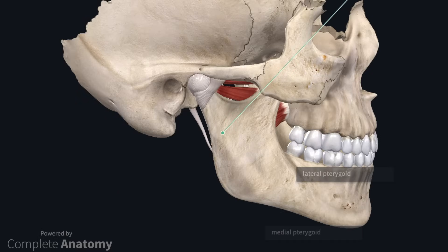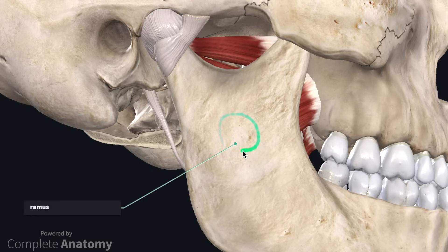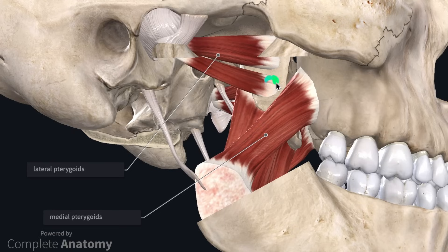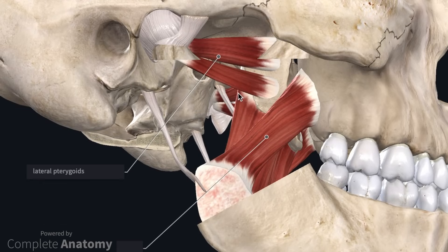The lateral pterygoid is best seen on a lateral view of the model. To see the pterygoids, we must first remove the ramus of the mandible. With the ramus removed, we can see the superficial head of the medial pterygoid muscle. Up here we can see the lateral pterygoid muscles, with a superior head and an inferior head. The superior head attaches to the roof of the infratemporal fossa as well as the lateral portion of the lateral pterygoid plates. The inferior head attaches to the lateral portion of the lateral pterygoid plates. Moving posteriorly, both heads fuse and attach to the condyloid process of the mandible. When the lateral pterygoid muscles act bilaterally, they protrude the jaw — a movement that is paramount to the opening of the mouth. Unilateral contraction swings the jaw to the contralateral side.